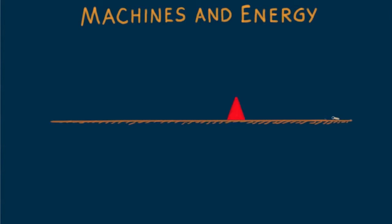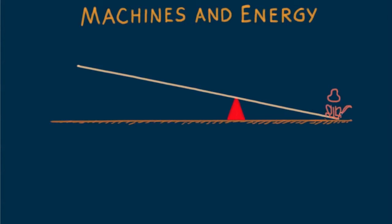The simplest machine is the lever. Centuries ago, the Greek philosopher Archimedes said that given a long enough lever and a place to stand, he could lift the world. A lever consists of a length of wood or metal bar supported by a fulcrum. A lever can multiply force or simply change the direction of an applied force. In this case, an applied force on the left end lifts a load — our dog, Bo — on the other end.